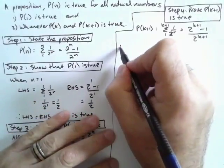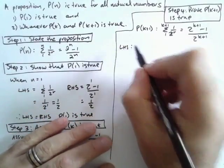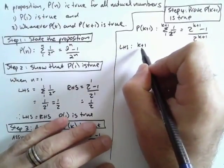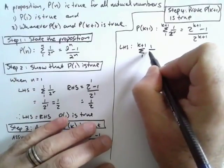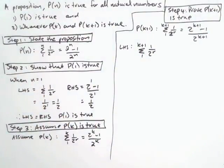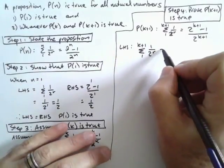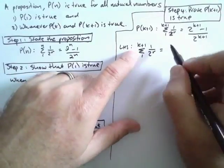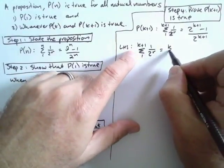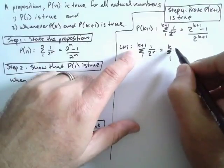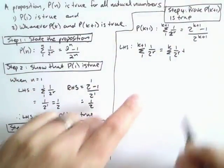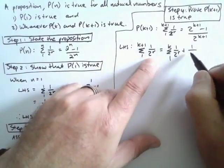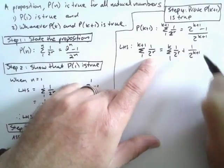My left-hand side equals the sum from 1 to k+1 of 1 over 2^r. I can break this up: the sum from 1 to k of 1 over 2^r, plus 1 over 2^(k+1), where I substitute k+1 for r.